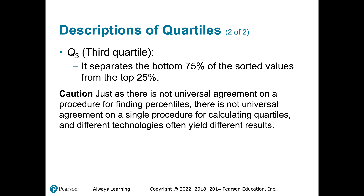I provide a caution here: you can have the exact same data set, enter the data into different technology, and you will get different quartiles. It doesn't happen often, but there are situations where that happens. So depending on the technology that you use, you could get different quartiles. For your homework assignment, you'll definitely want to use StatCrunch so you get the correct answers.